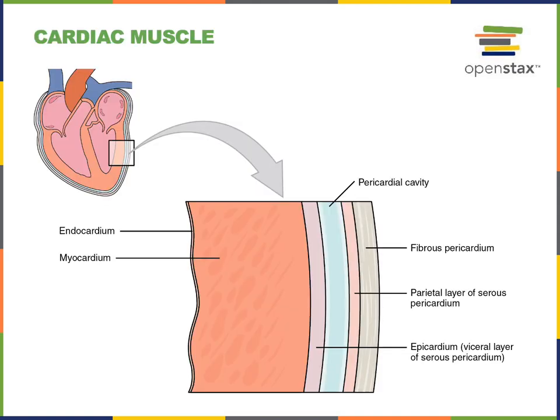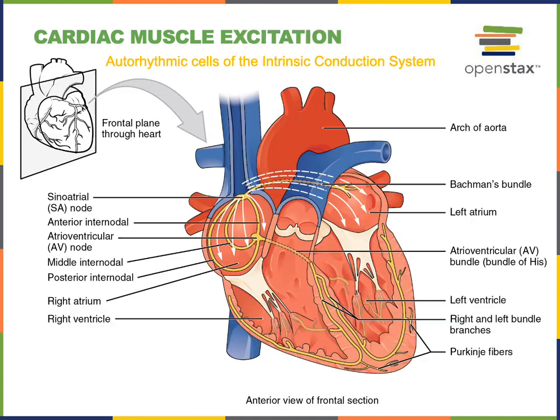Cardiac muscle is found in the heart, specifically in the wall of the heart in a layer known as the myocardium. There are three layers of the heart wall: the endocardium and epicardium are layers of epithelial tissue surrounding the thick middle layer, the myocardium, where the cardiac muscle is found.